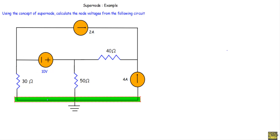Here this ground will be our reference node. This will be a node — let's say this is our node number one, this is our node number two, and this is our node number three. After identifying the nodes, we will assign V0 equal to zero volts to the reference node, V1 at node number one, V2 at node number two, and V3 at node number three.